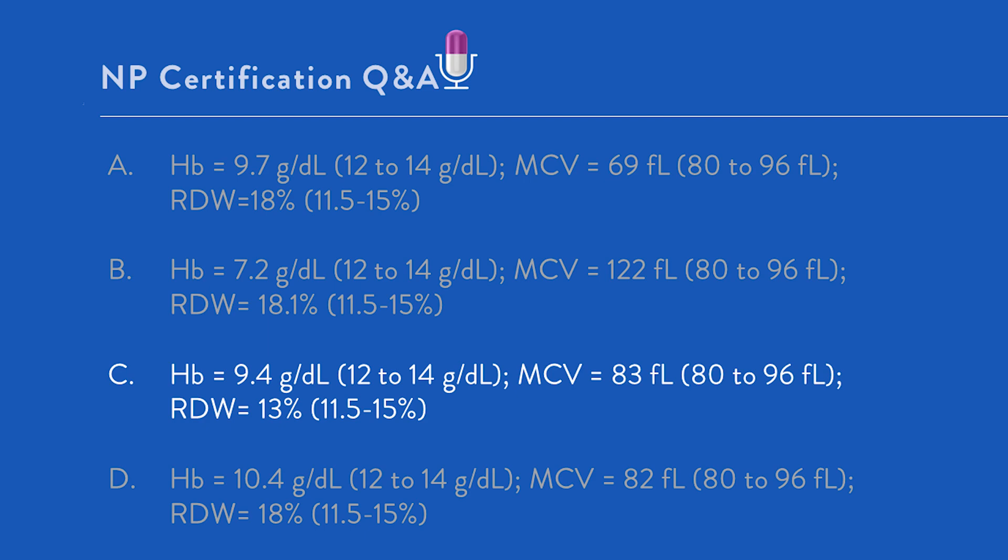This hemogram is more indicative of a developing iron deficiency anemia. Iron deficiency anemia in CKD can occur. It usually is associated with other factors that result in chronic low volume blood loss, because chronic low volume blood loss in the adult is the most common reason for iron deficiency anemia. Option B: hemoglobin 7.2, MCV of 122, a marked macrocytosis, RDW 18.1%, telling us that the new cells are different size than existing cells, perhaps even bigger than the existing cells. This is also incorrect.